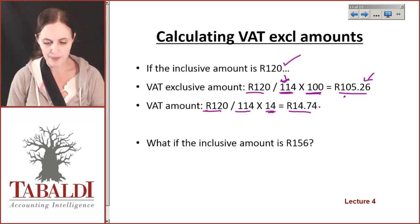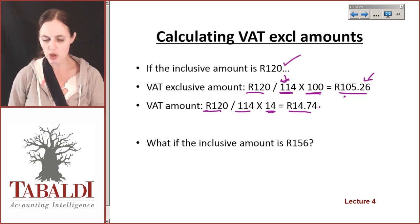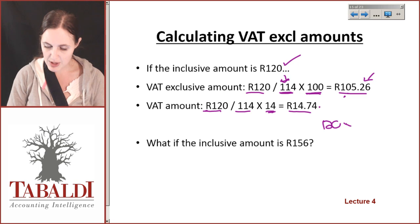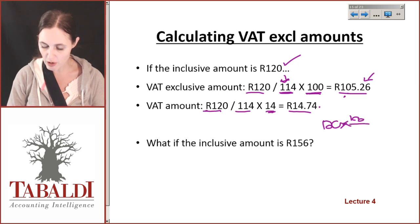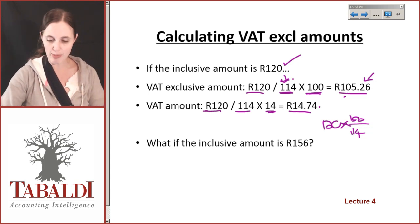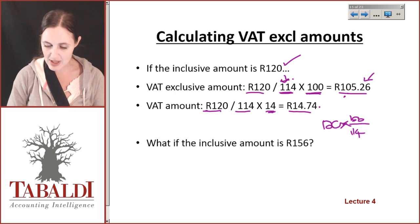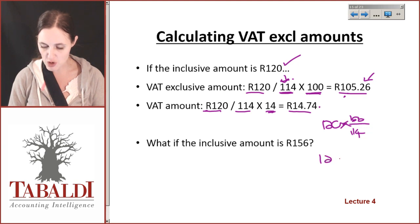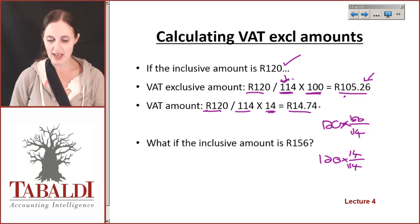This particular calculation is very, very important. You could also write the formula differently: instead of dividing by 114 then multiplying by 100, you could write it as 120 times 100 over 114. And to get the VAT you could write 120 times 14 over 114. Some people understand it a little bit easier by putting it that way. Either way, that is a calculation that you must get used to.